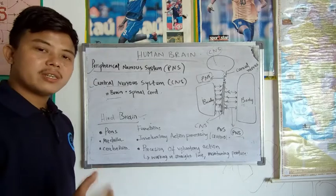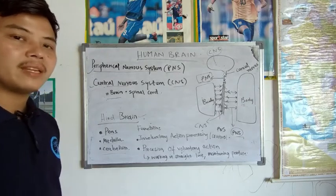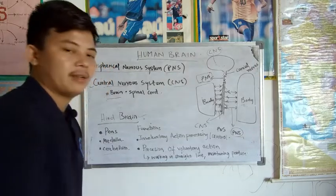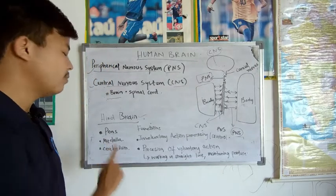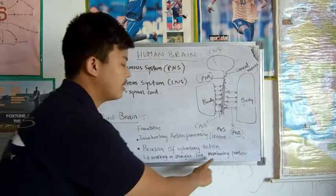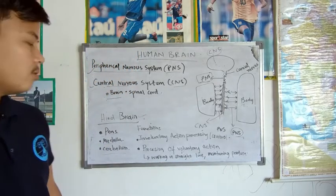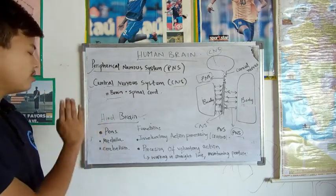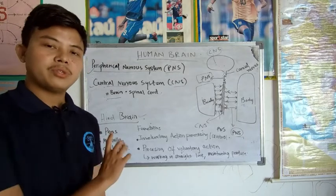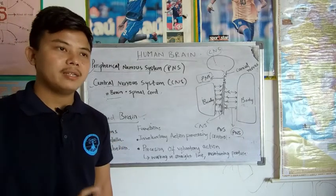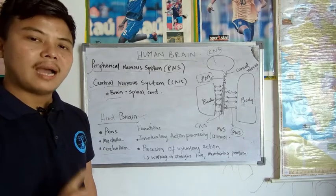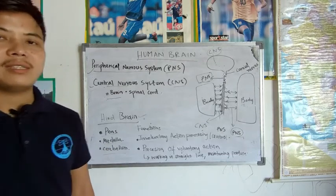The hindbrain also controls walking in a straight line and maintaining the posture of the body. When a person is under the influence of chemicals like alcohol or drugs, they are unable to walk in a straight line because the hindbrain is not working properly. So maintaining posture and balance is due to the hindbrain. This portion covers the basics of the cluster exactly according to the textbook. Thank you.